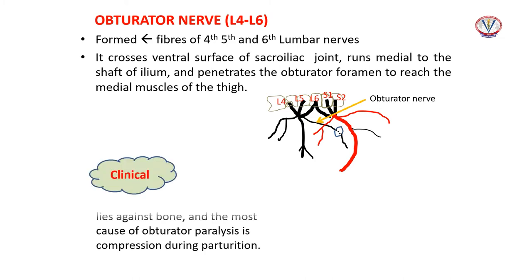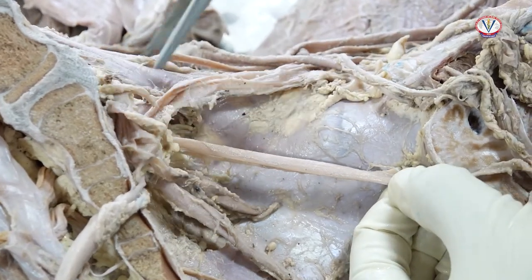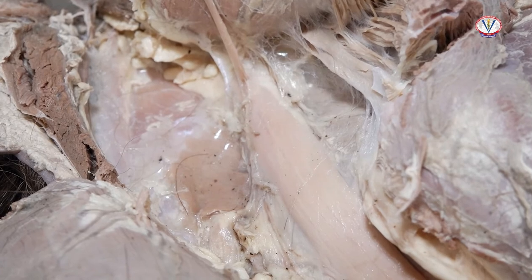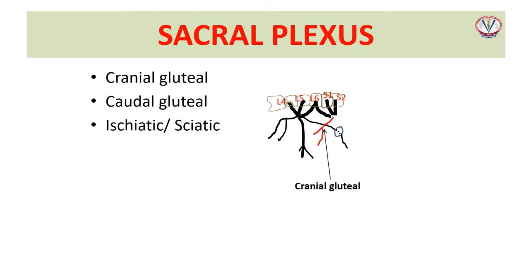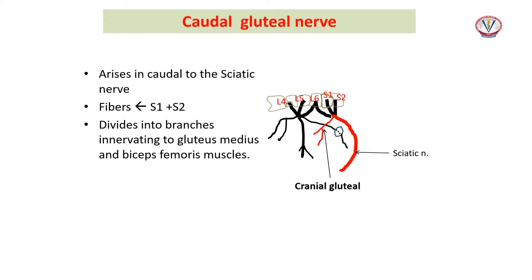The sacral plexus gives off three named branches: cranial gluteal, caudal gluteal, and sciatic nerves. The fibers of the cranial gluteal nerve arise in front of the sciatic nerve, pass between gluteus profundus and gluteus accessorius, reach the tensor fasciae latae, and innervate these muscles. The caudal gluteal nerve arises caudal to the sciatic nerve, divides into branches innervating gluteus medius and biceps femoris muscles.